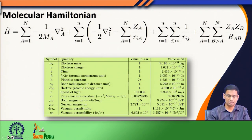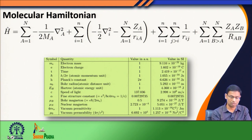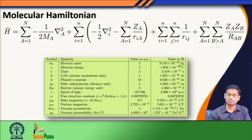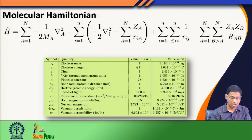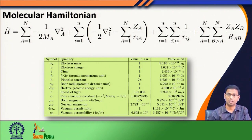One thing you might have already noticed is that this Hamiltonian is written in the so-called atomic unit. In atomic unit, we have made some constants equal to 1. For example, the unit of mass is given by the electron mass in atomic unit, whose SI value is 9.1×10⁻³¹ kg. Similarly, the charge of the electron is considered as one unit of charge. So wherever we had an e² term in the Coulomb interaction term, when writing the Hamiltonian in atomic units, those e² terms are not present because they are all equal to 1.